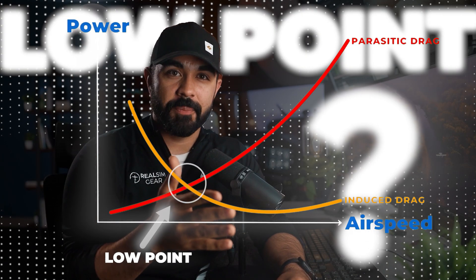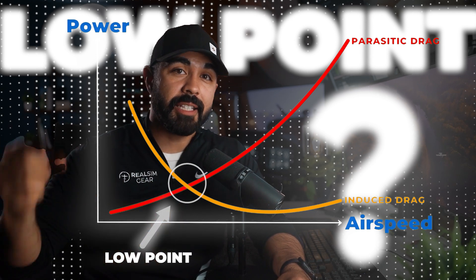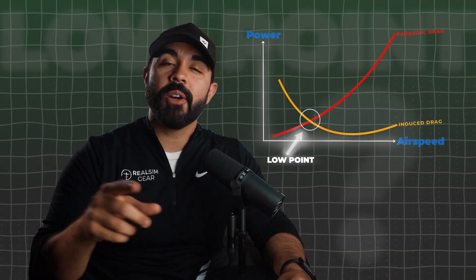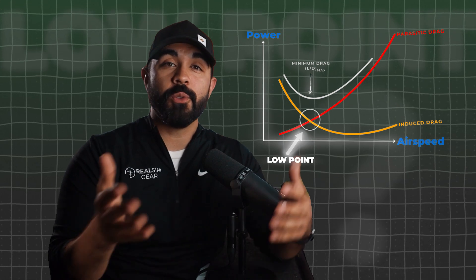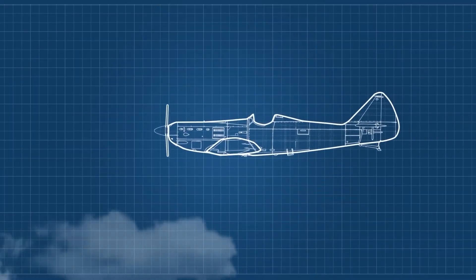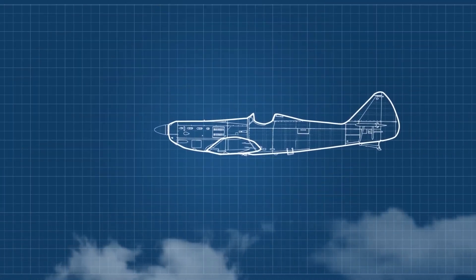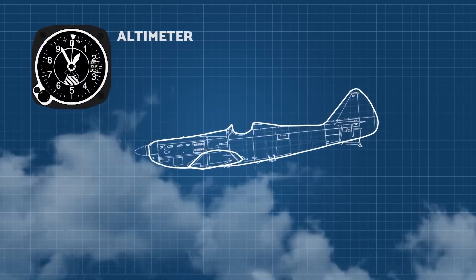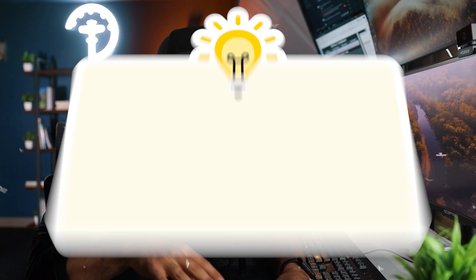What does the low point on the curve mean? This represents the airspeed at which the airplane has the least amount of drag, and it is known as the LD max, meaning the best lift-to-drag ratio. It's also the best glide speed, so in the event you lose your engine and you're now a glider pilot, this is the airspeed that will take you the furthest distance. In a Cessna 172, this speed is typically 65 knots.